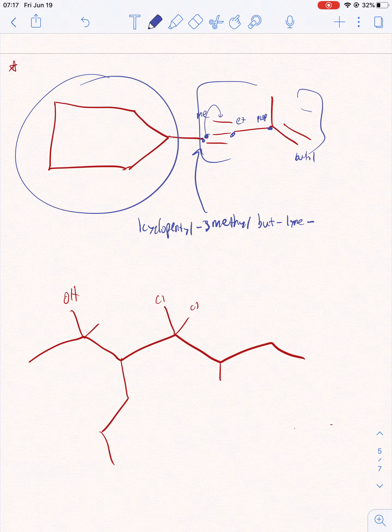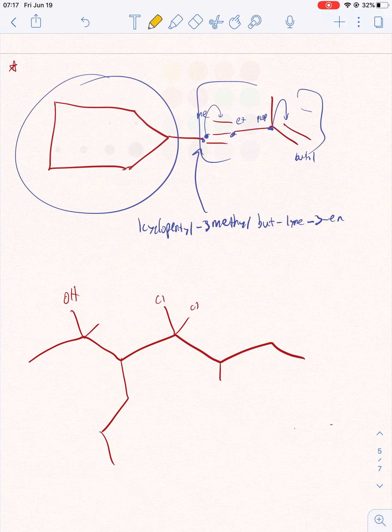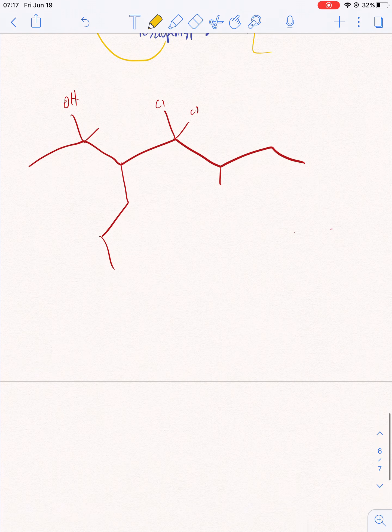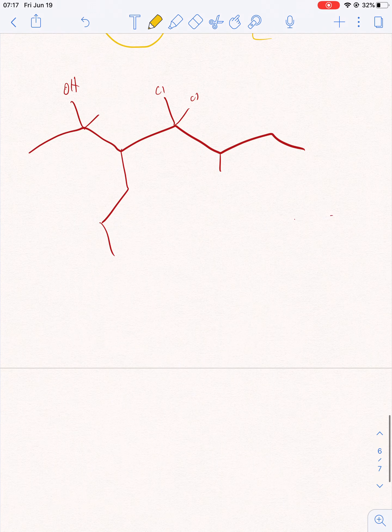Two, three - double bond on the second carbon. Three-ene. One cyclopentyl, three methyl, but now we're in our main chain. One-yne, three-ene. So let's go to this one. We have to count the longest chain, right?